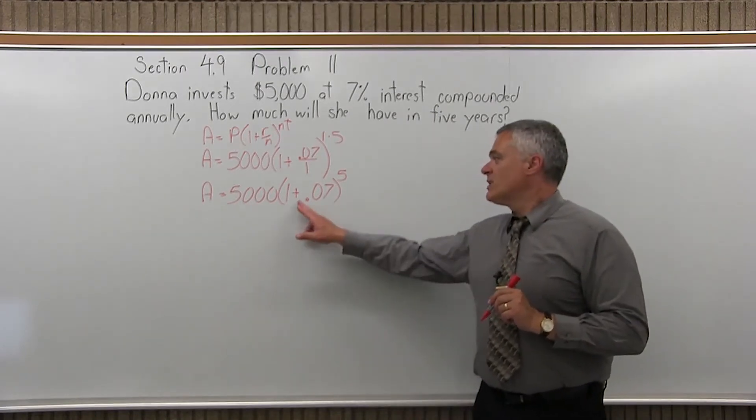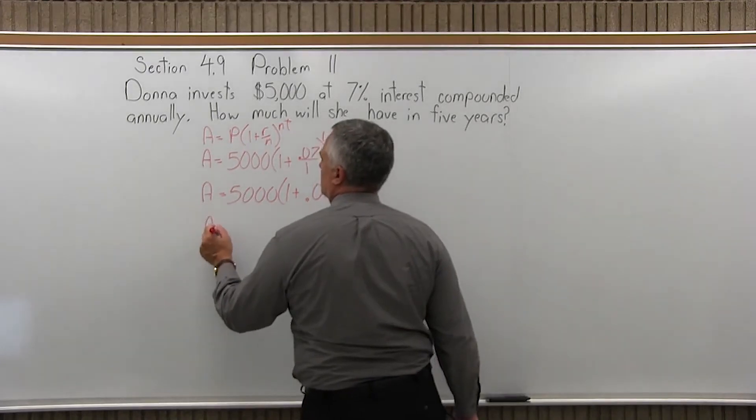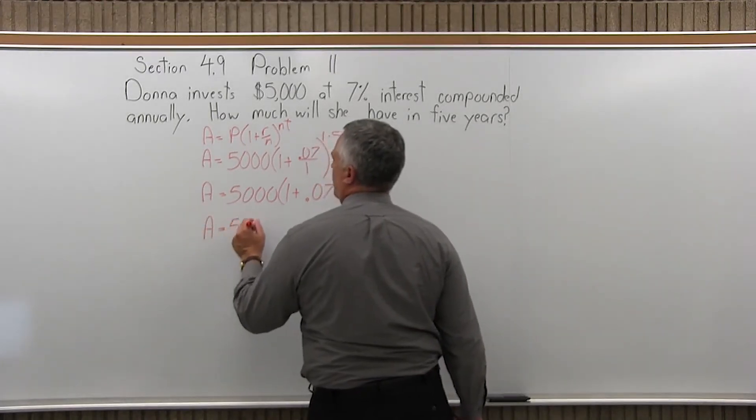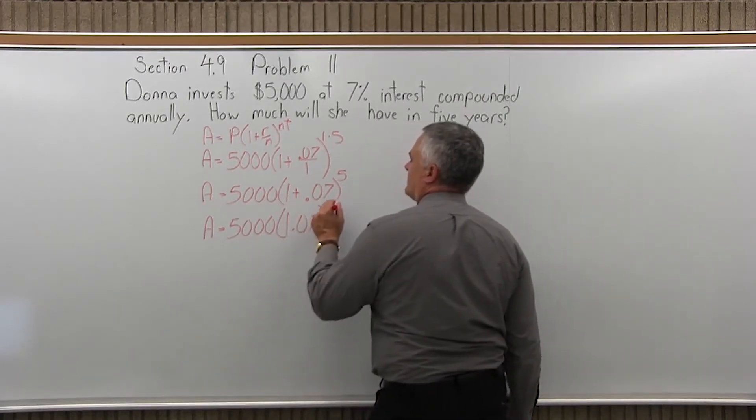Now I can finish my work in parentheses. I just add 1 plus 0.07, and that will be easy enough. So I have 5,000 times in parentheses 1.07, the exponent is 5.